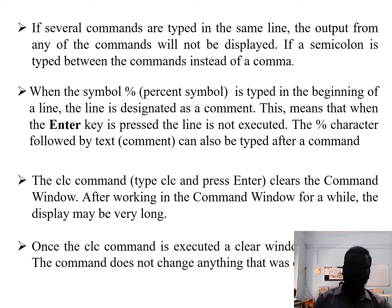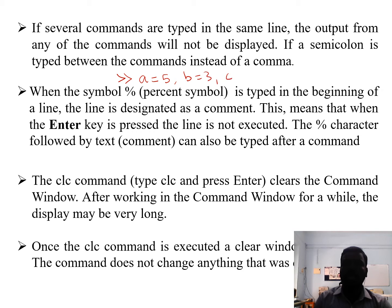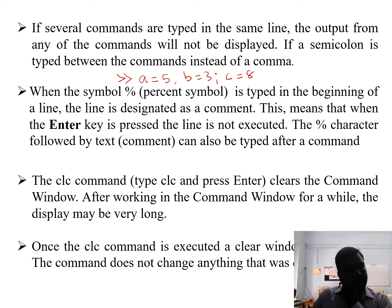When several commands are typed on the same line, the output of any specific command will not be displayed if a semicolon is placed at its end. For example, with a = 5, b = 3, c = 8 on one line: if you put a semicolon after b, then only a and c values are displayed. If you put a semicolon after a, then only b and c are displayed.